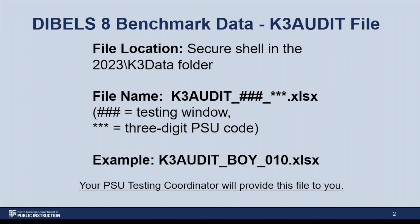The first file is called the K3 audit file. This file contains the student-level data for all students who tested or were expected to be tested with DIBLS-8 for each benchmark window — beginning of year, middle of year, and end of year. The file name will be as displayed on the slide, with the three hashtags representing the testing window and the three asterisks representing the PSU code. In this example, the file would be named K3_audit_VOI_010.